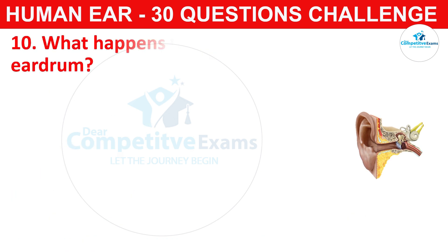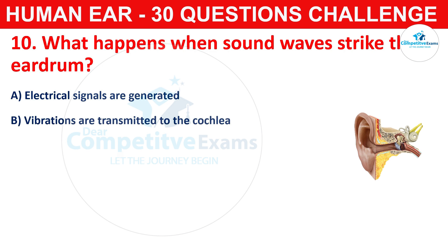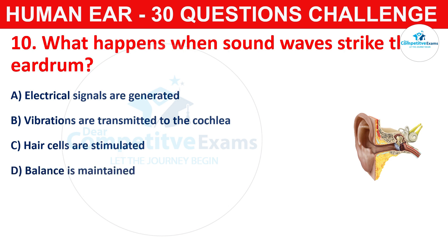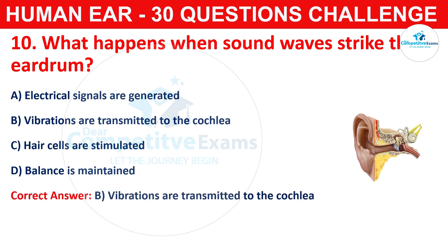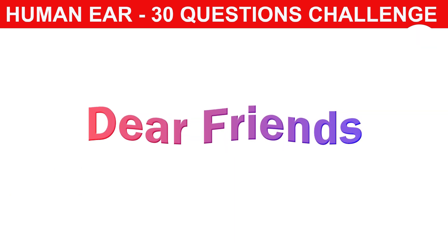Question number ten: what happens when sound waves strike the eardrum? Your options are electrical signals are generated, vibrations are transmitted to the cochlea, hair cells are stimulated, or balance is maintained. The correct answer is B, that is vibrations are transmitted to the cochlea. When sound waves strike the eardrum, it vibrates and transmits these vibrations to the cochlea via the ossicles.